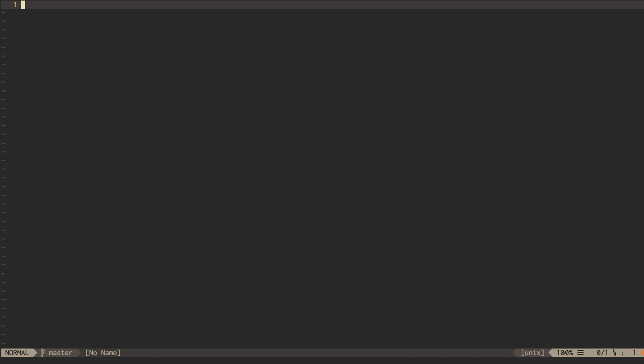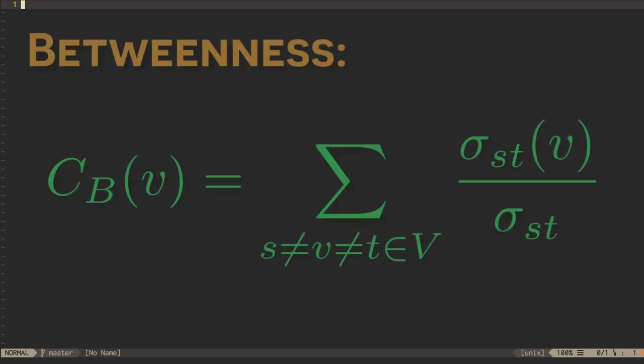A more sophisticated measure of centrality is betweenness centrality. This is a measure of how many of the shortest paths through a graph flow through a particular vertex. More formally,